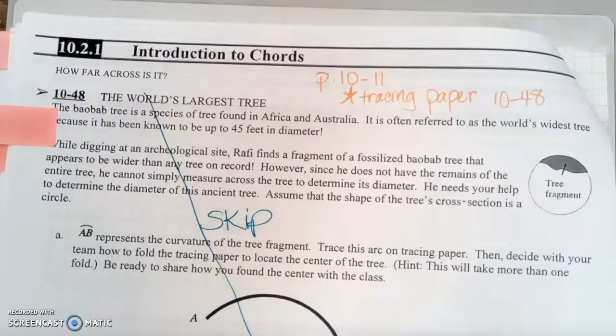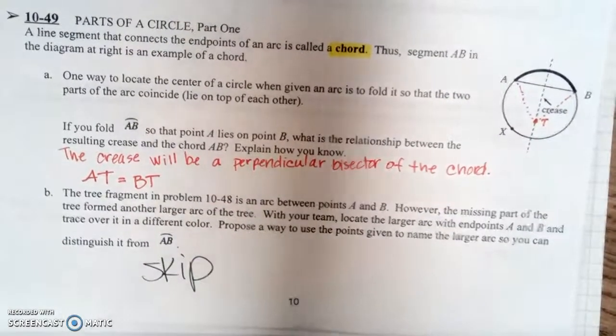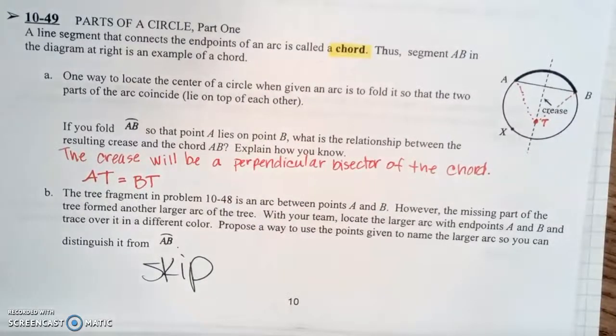Section 10-21 is titled Introduction to Chords and we're going to answer the question how far across is it. We're going to skip question 48 and jump down to question 49 which is titled Parts of a Circle Part 1.